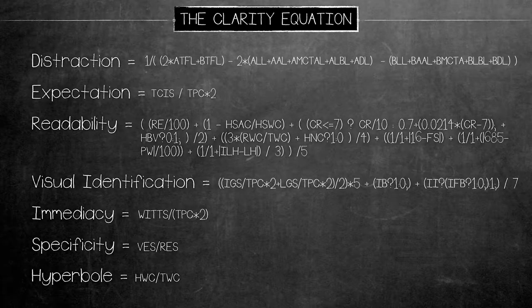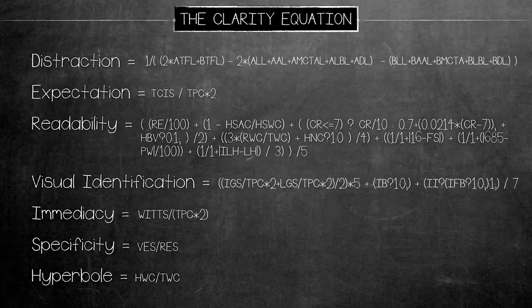Distraction: what's going on around your value prop to distract people from understanding it? Expectation: do you actually describe what's going to happen when you click your CTA? Readability: can you read it — is it hard, complicated, or difficult visually? Visual identification: if you take the main visual, your hero shot, in isolation on its own, can you tell what your product or service does? Immediacy: can you do it all in five seconds? Specificity: are the details that are important — why you're different — are they there? And hyperbole, or lack thereof. That spells DERVISH.